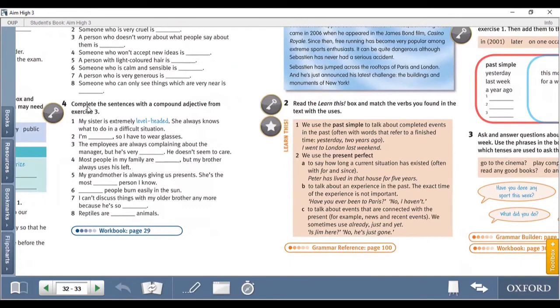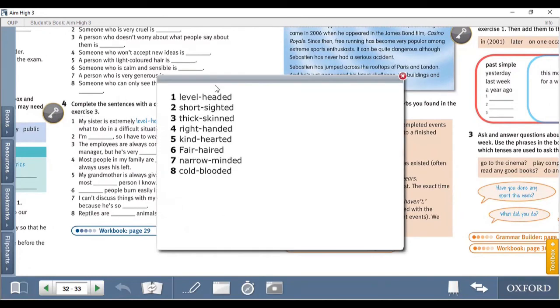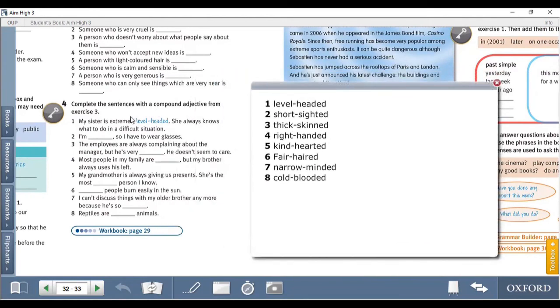Exercise number four, complete sentences with the compound adjectives from exercise number three. Number one, my sister is extremely level-headed, she always knows what to do in a difficult situation. Number two, I am short-sighted so I have to wear glasses. Number three, the employees are always complaining about the manager but he is very thick-skinned, he doesn't seem to care.